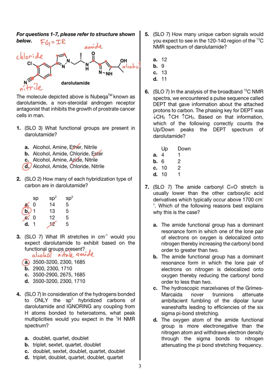Question 4: in consideration of hydrogens bonded to only SP3 hybridized carbons and ignoring coupling from heteroatoms, what peak multiplicities would you expect in the NMR spectrum? Identifying the SP3 hybridized carbons: one has one neighbor — doublet; one has five neighbors — sextet; one has one neighbor — doublet; one has three neighbors — quartet; and one has one neighbor — doublet. The correct answer for number 4 is C: doublet, sextet, doublet, quartet, doublet.